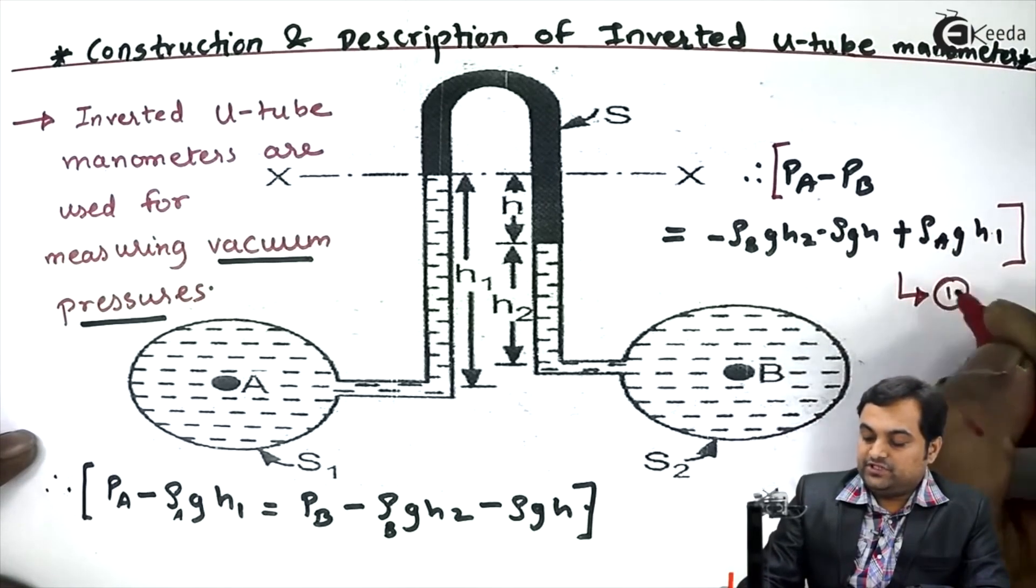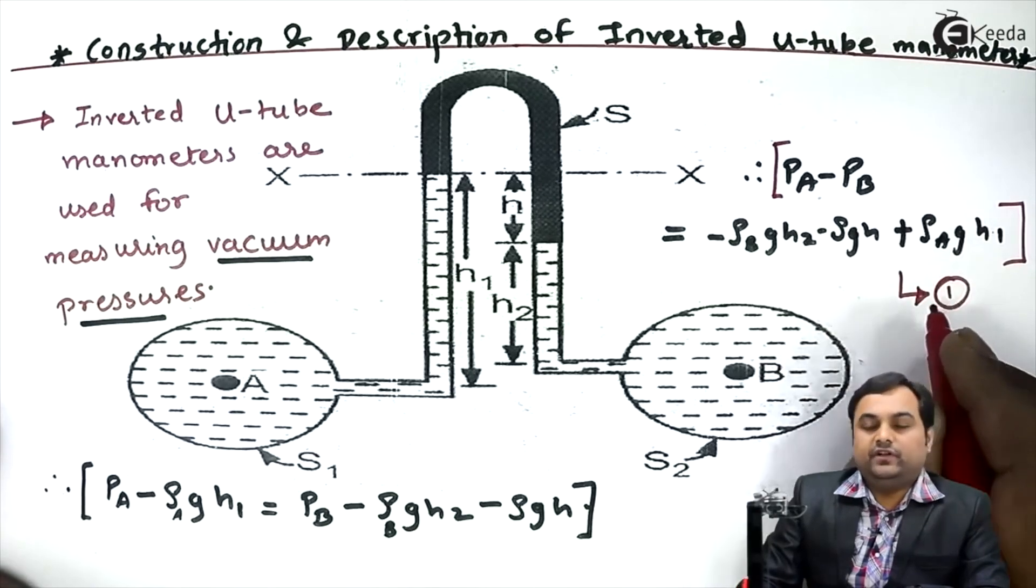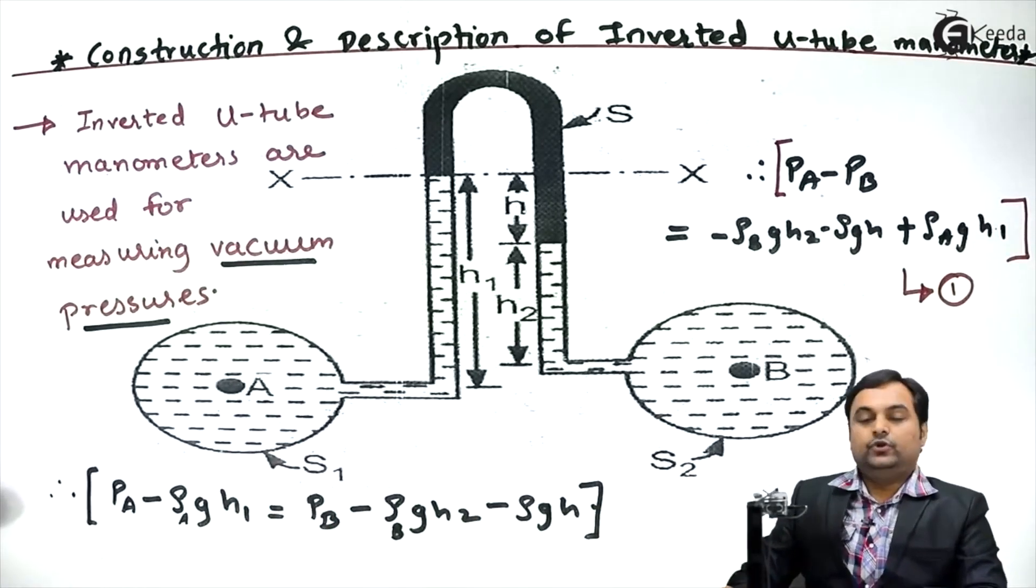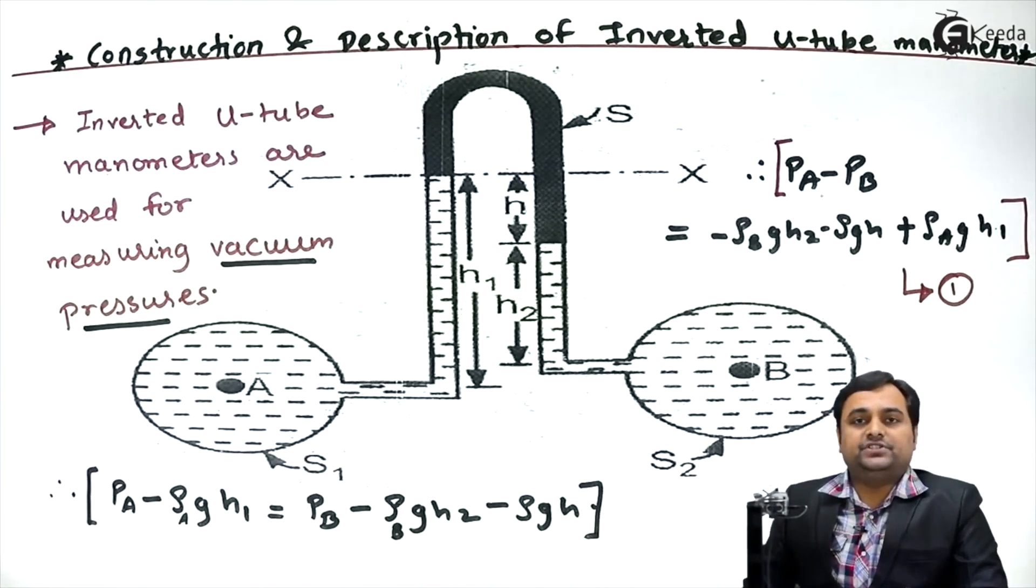From equation one, we can calculate the pressure difference between two different pipelines. So in this video we have seen how to calculate the vacuum pressure by using inverted U-tube manometer.